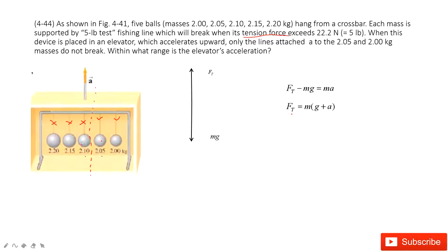When the mass is just 2.10, this tension must exceed the 22.2 N, must exceed this tension max. Because it breaks. So the tension at this one is m times g plus a. This m, we take it as 2.1 kg, must exceed the boundary line 22.2 N, the FT max.